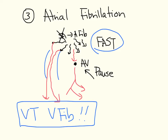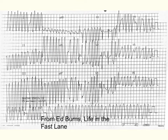The ECG would be fast, irregular, and wide. Since the underlying rhythm is AFib, it is irregular. Since many impulses are going down the accessory pathway, the complexes are wide. Those wide complexes are the ones going through the accessory pathway. You can still see a few narrow ones if impulses manage to go through the normal pathway.